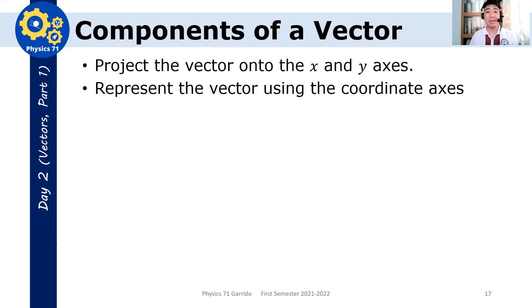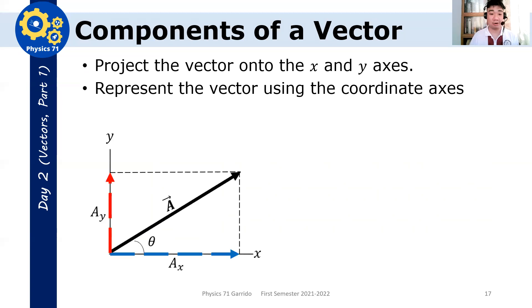Now, we can get the components of a vector and express our vector in terms of the unit vector notation. So how do we do that? First, you project the vector onto the x and y-axis, and then we represent the vector using the coordinate axes. For example, here, this vector a here, what we did here is to drop a perpendicular shadow, and then you measured the length of this one, and you get something as your ax. The ax now is the x component of the vector.